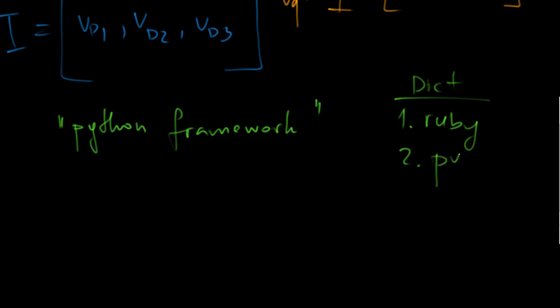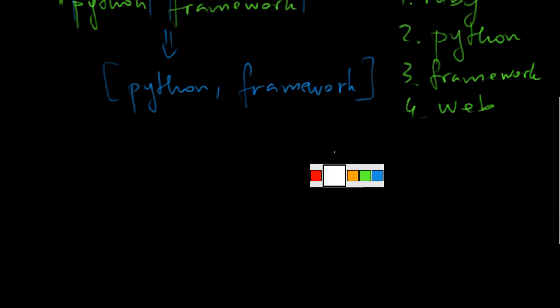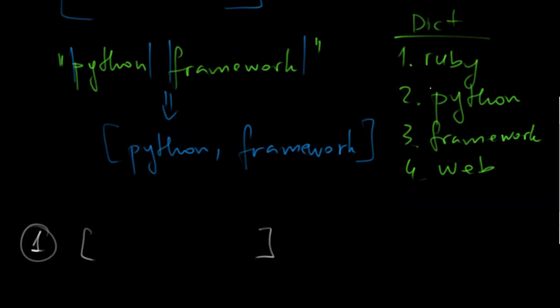The second thing is to split the string into words, so here we go: Python, framework. Now once we have all this data, we can start forming a vector. Initially the vector is filled with zeros, and its length is equal to the number of words in the dictionary. So our dictionary has four words, which means there will be four elements in the vector, four zeros.